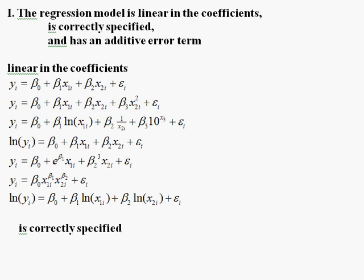Welcome back. Now the first assumption again has three parts: the regression is linear, the model is linear in the coefficients, correctly specified, and has an additive error term.